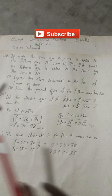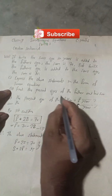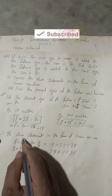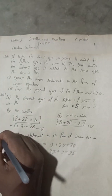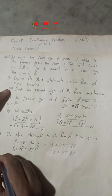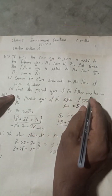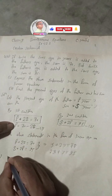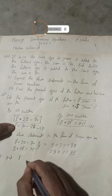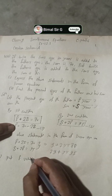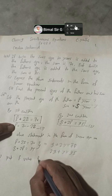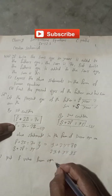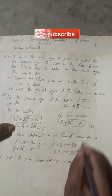Now for part two — find the present ages of the father and his son. To get the solution, we will put the value of F from equation one into equation two.